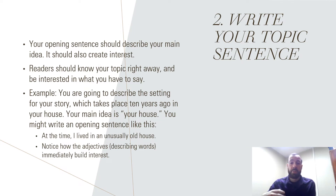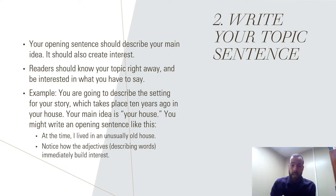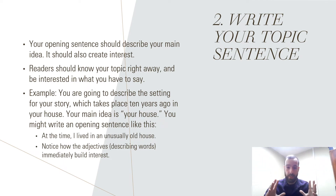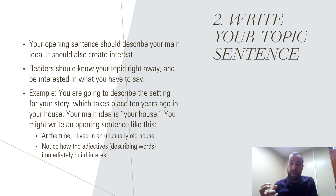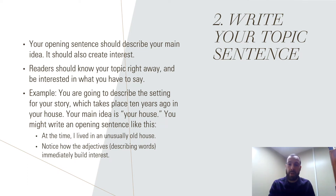A good rule of thumb is to open your paragraph by announcing what your main idea for that paragraph is. This helps communicate clearly and creates interest — readers should know your topic right away and be curious to hear what you have to say. For example, if you're writing a fictional story describing the setting of your house, you could write: 'At the time, I lived in an unusually old house.' Right away, readers know your topic, and notice how adjectives like 'unusually old' help build interest.